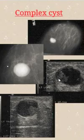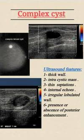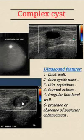A complex cyst can have a blood clot within it, a thick wall, an intracystic mass, thin septations, internal echoes, irregular lobulated walls, and either present or absent posterior enhancement. On Doppler, there is no vascularity inside, indicating it's a cyst that may contain a hematoma or clot rather than soft tissue — confirmed by no flow on Doppler.